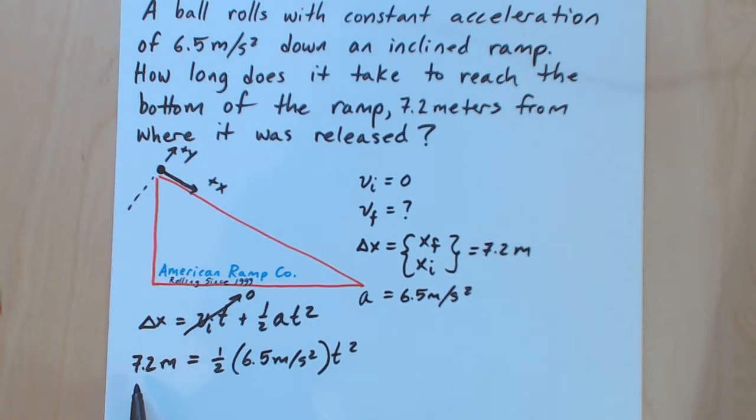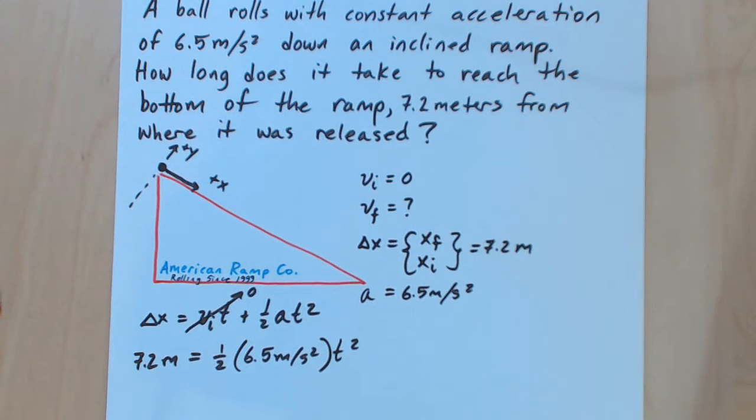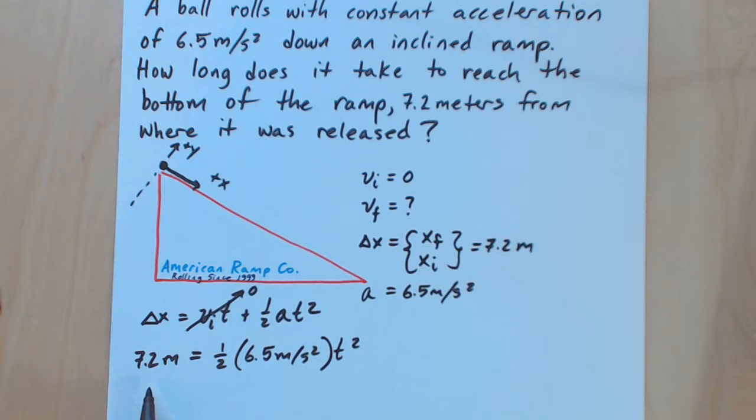Now let's consider whether this displacement that we're given for delta x, 7.2 meters, should be positive or negative. There's a couple of ways we can do this. We can start solving the equation and then straighten up our sign. But if we say that over here at the bottom of the ramp is x final, then 7.2 meters is over here. 7.2 minus zero is positive 7.2. The other check is that when we multiply this out and divide to get square of time, we know we need a positive value in our square root expression. So it looks like the signs are in agreement.